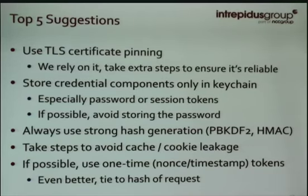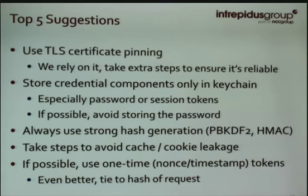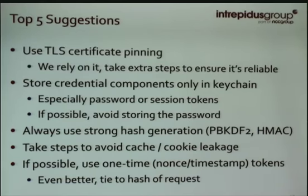Top five suggestions: use cert pinning — we rely on TLS, the OAuth 2 spec says to rely on TLS, so do everything you can to make it actually reliable; store credentials only in the keychain, especially passwords and tokens, and if possible avoid storing user IDs; always use strong hash generation like PBKDF2, using HMAC-based approaches not subject to hash extension attacks; take steps to avoid leakage into automatic caches and cookie files; and if possible, use one-time tokens that can't be replayed — even better, tie those to the request. Those are the five things in ascending order of complexity, but doing anything from this list will kick application security up a level.